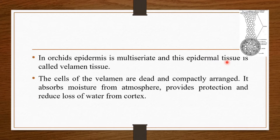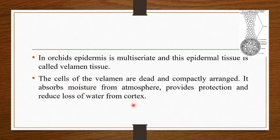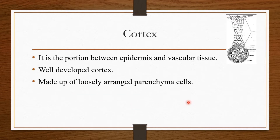In orchids, this epidermis is multiseriate, and this epidermal tissue is called velamen tissue. The cells of this velamen are dead and compactly arranged so that it can absorb moisture from the atmosphere, providing protection and reducing loss of water from the cortex.